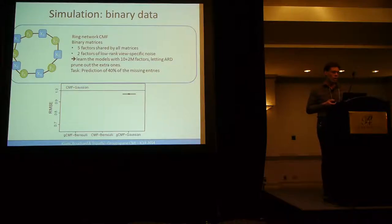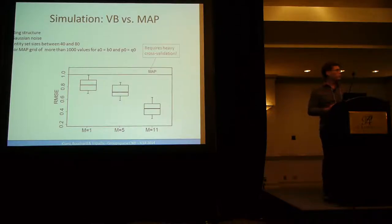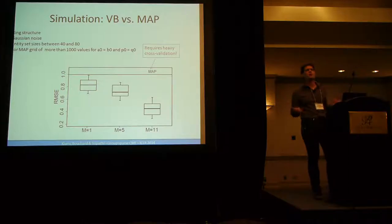And then we did two simulations, one to show that binary data is actually very useful. The baseline is CMF with Gaussian, and then we do the group sparse CMF with Gaussian. But since the data were generated according to this schema with binary matrix, we can see that if we take into account the loss that we defined, we get a better result, and if we in addition take the group sparsity, we have even better performances. And also we did a simulation between VB and MAP.